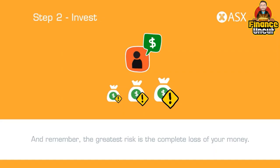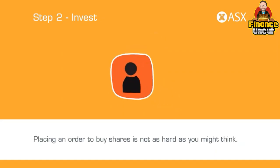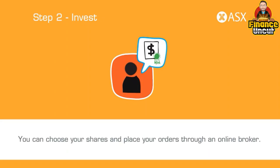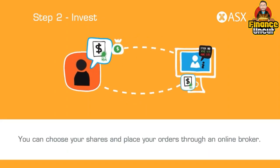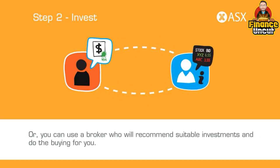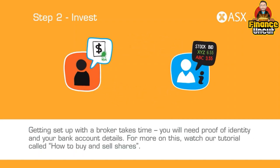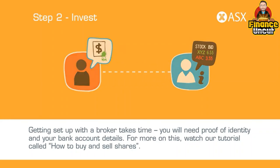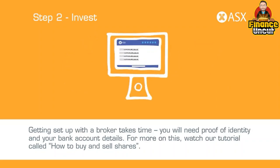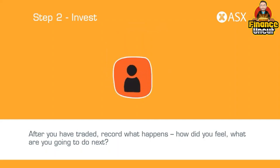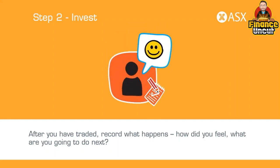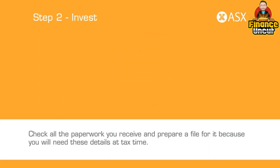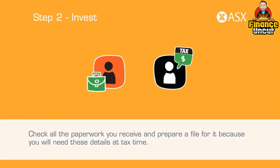The greatest risk is the complete loss of your money. Placing an order to buy shares is not as hard as you might think. You can choose your shares and place your orders through an online broker, or you can use a broker who will recommend suitable investments and do the buying for you. Getting set up with a broker takes time — you will need proof of identity and your bank account details. After you have traded, record what happens: how did you feel, what are you going to do next? Check all the paperwork you receive and prepare a file for it, because you will need these details at tax time.